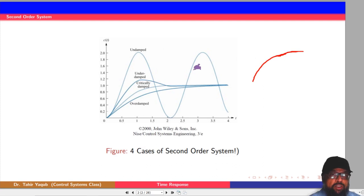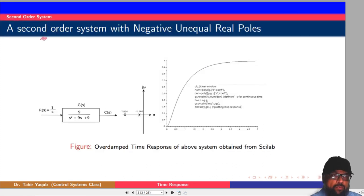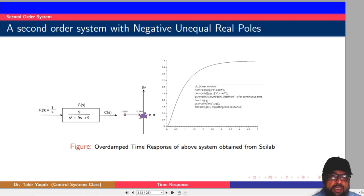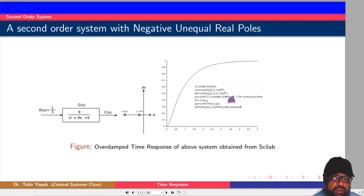Now we will discuss which kind of poles result in which kind of curve. The first case is a second order system with negative, unequal real poles — in this case the response will be overdamped. For example, with the equation s² + 9s + 9, finding the roots using the quadratic formula gives values around minus seven-point-something and minus one-point-something. Both poles are real, negative, and distinct, so the response will be overdamped. This is the Scilab code, and I will put the Scilab programs with the course files so you can run them and see the response.